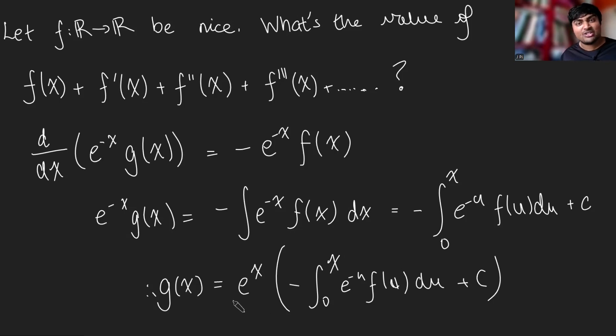And so this is what this function g(x) should be. So provided f is nice, and again, I haven't defined what I mean by nice, g(x) will equal e^x times this thing here—minus the integral from 0 to x of e^(-u)f(u)du plus a constant. So maybe you can think about what conditions—what does the word nice mean in this context? Obviously, f has to be infinitely differentiable.